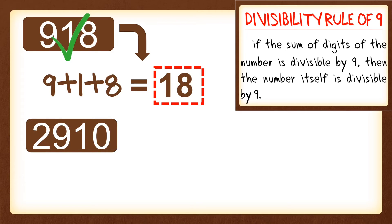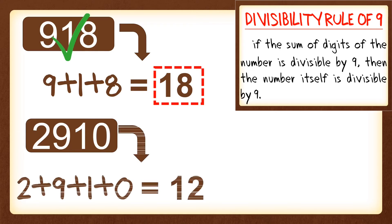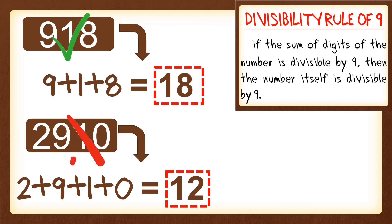Next, 2,910. Get the sum of the digits: 2 plus 9 plus 1 plus 0, and we get the sum of 12. And 12 is not divisible by or a multiple of 9, so 2,910 is also not divisible by 9.